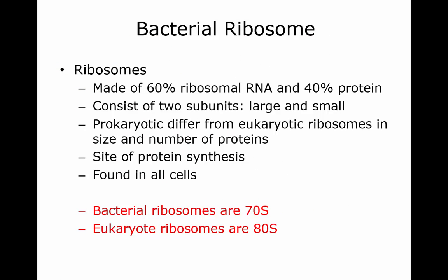Now to look at the ribosomes. The ribosomes are about 60% ribosomal RNA and 40% protein, and they have two subunits: the large subunit and the small. The prokaryotic ribosomes are a lot smaller than eukaryotic ribosomes and they have fewer proteins, but they are still where proteins are made. It's the site of protein synthesis.